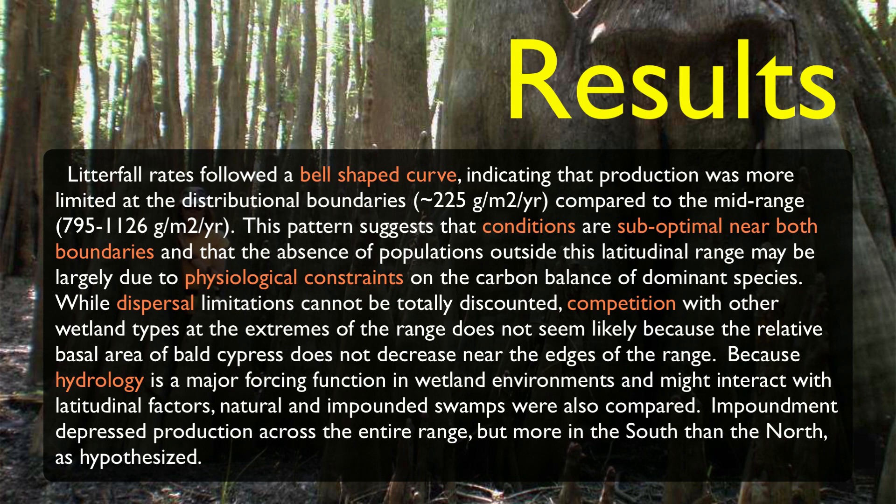The next section provides the main findings that directly relate to the central problem or questions addressed. We described patterns in the production data and what they suggested about controls on the distribution and production of bald cypress swamps. We also acknowledged alternative explanations for observed patterns, such as dispersal, competition, and other environmental conditions. Depending on the journal, you can provide data in the results section of an abstract, as we did, to emphasize the key findings.